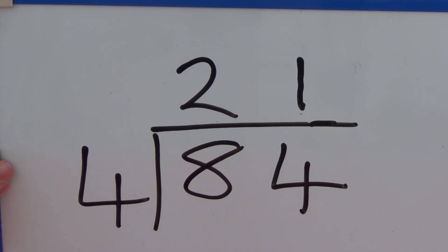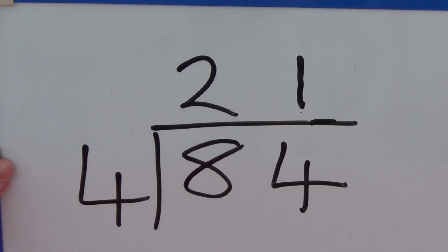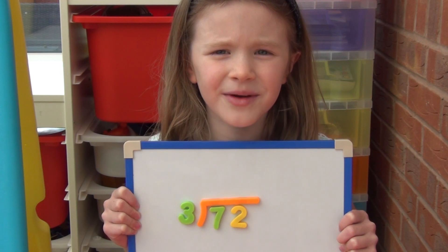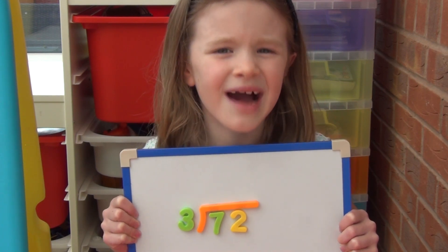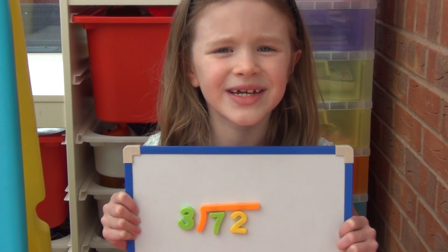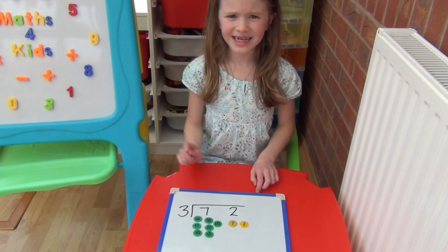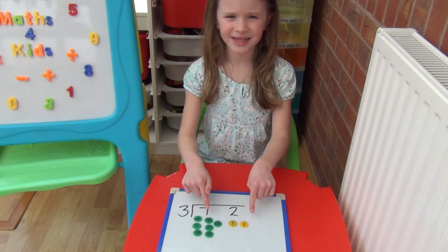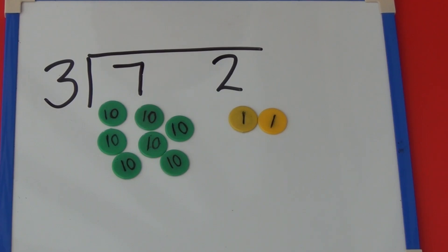I can show you this as a written method without the counters. Now I'm going to try a tricky one — this time I'm going to work out 72 divided by 3. I'll need 7 tens for the 70 and 2 ones for the 2. I'm going to do exactly the same as last time, but this time, as we're dividing by 3, I'm going to put the tens into groups of 3.